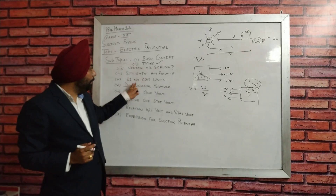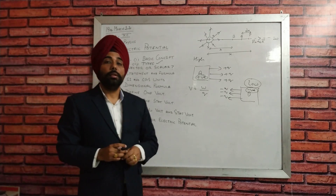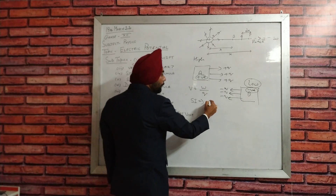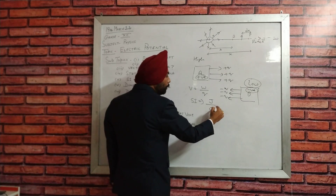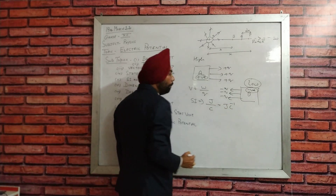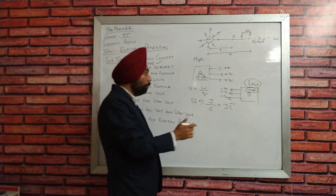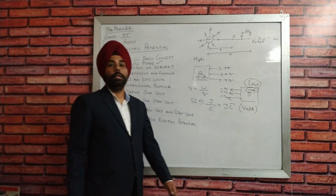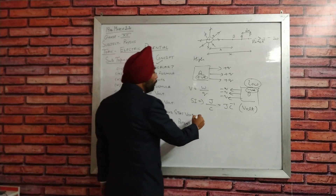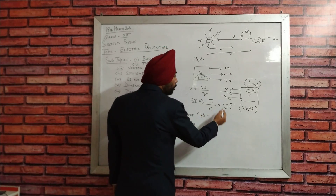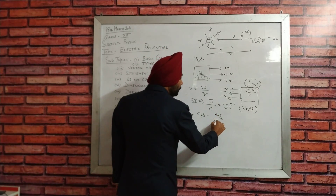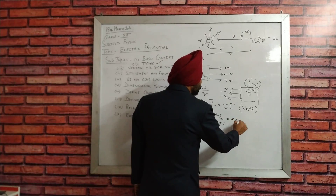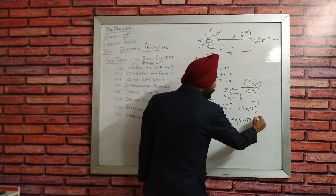From that formula you can easily find the SI and CGS units. For SI units, work is taken in joules and charge is in coulombs, so the SI unit is joules per coulomb, but this is basically known as VOLT. Similarly for CGS units, it is going to be erg per stat coulomb, which is also known as STATVOLT. So those are the basic SI and CGS units for electric potential.